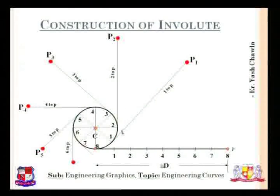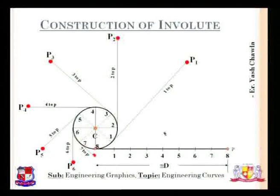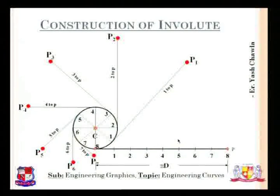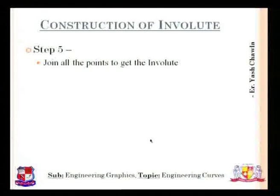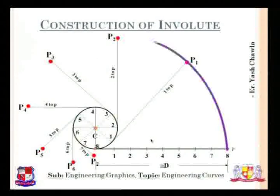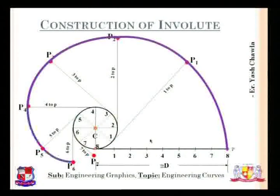All the red points as you can see are the points which are now visible on the screen. The next step is we have to draw the involute by joining all the points. So this is the involute that is required.